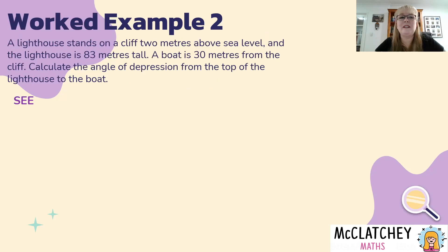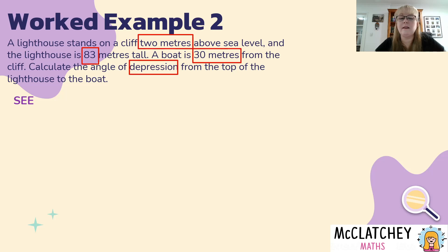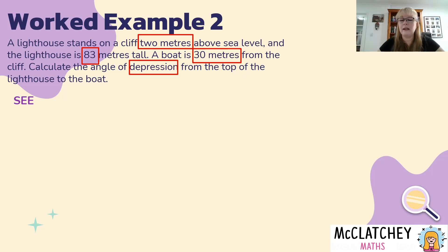Let's try this with a worked example. A lighthouse stands on a cliff two meters above sea level, and the lighthouse is 83 meters tall. A boat is 30 meters from the cliff. Calculate the angle of depression from the top of the lighthouse to the boat. Using Polya's model: the key information is the height of the cliff, the height of the lighthouse — so the total height from sea level is the cliff plus the lighthouse, giving 85 meters — and we know how far away the boat is. This time we're trying to find an angle of depression.